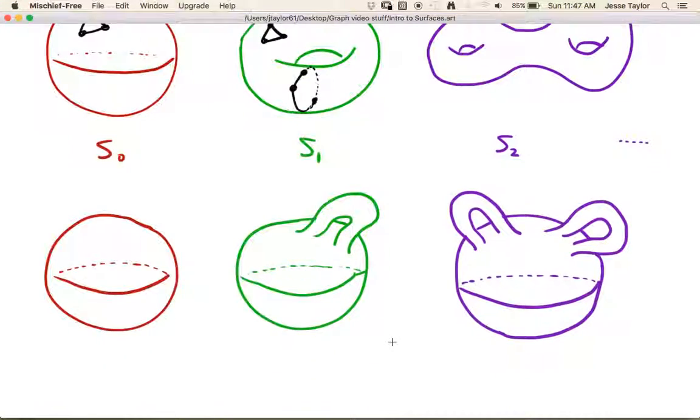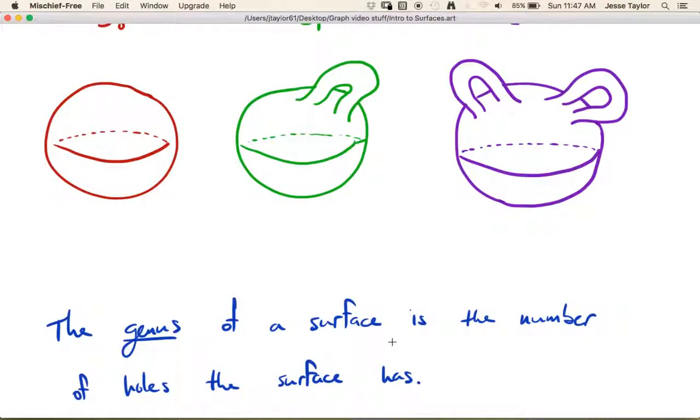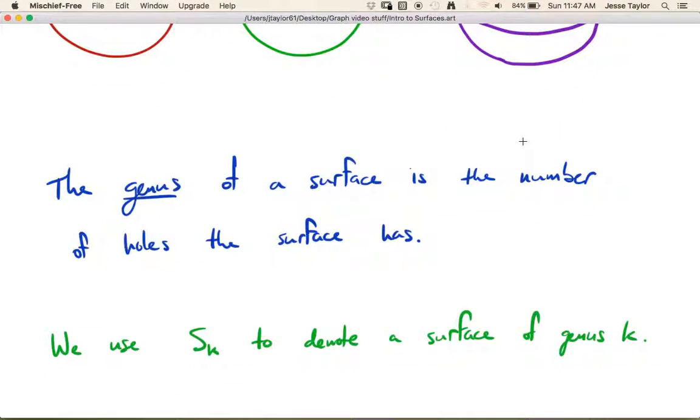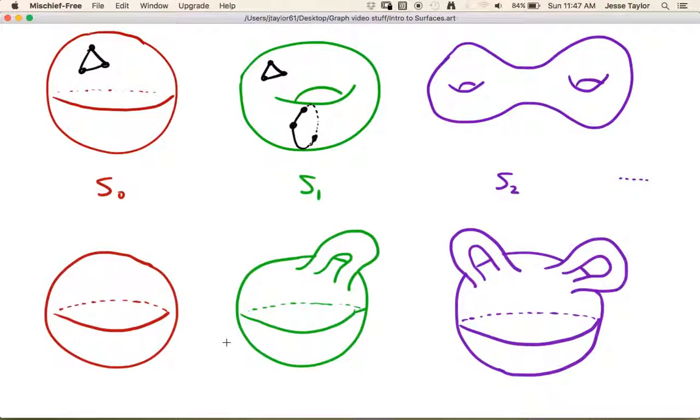So first of all, the genus of a surface is the number of holes it has. So for example, the sphere has genus 0, the torus has genus 1, the double torus has genus 2, and so on. And in general, Sk denotes a surface of genus k. So if you go back and look here, S sub 0, that's the sphere, S sub 1, that's the torus, S sub 2, that's the double torus, and so on. So the genus is just the number of holes in the surface.